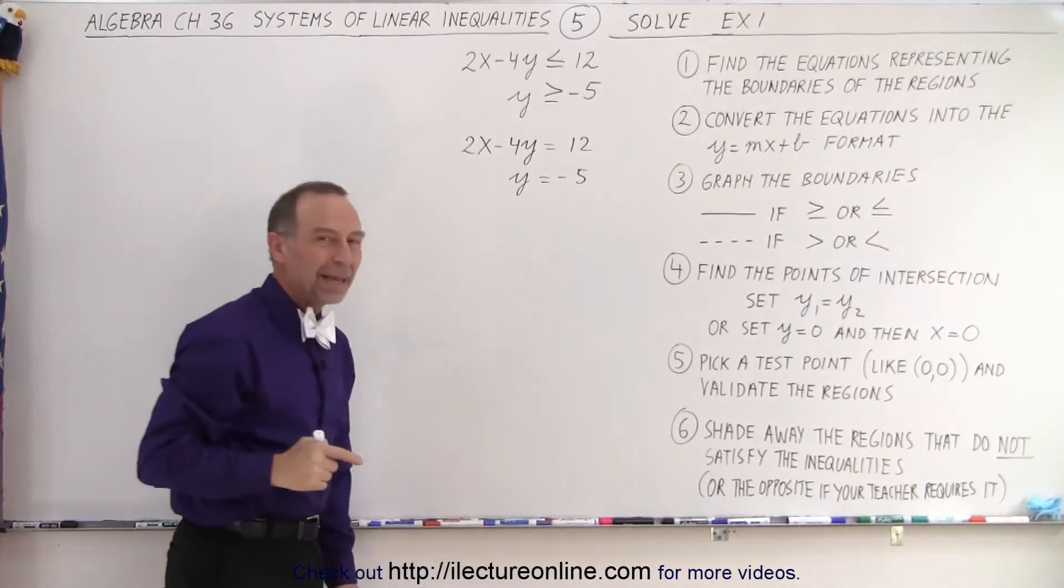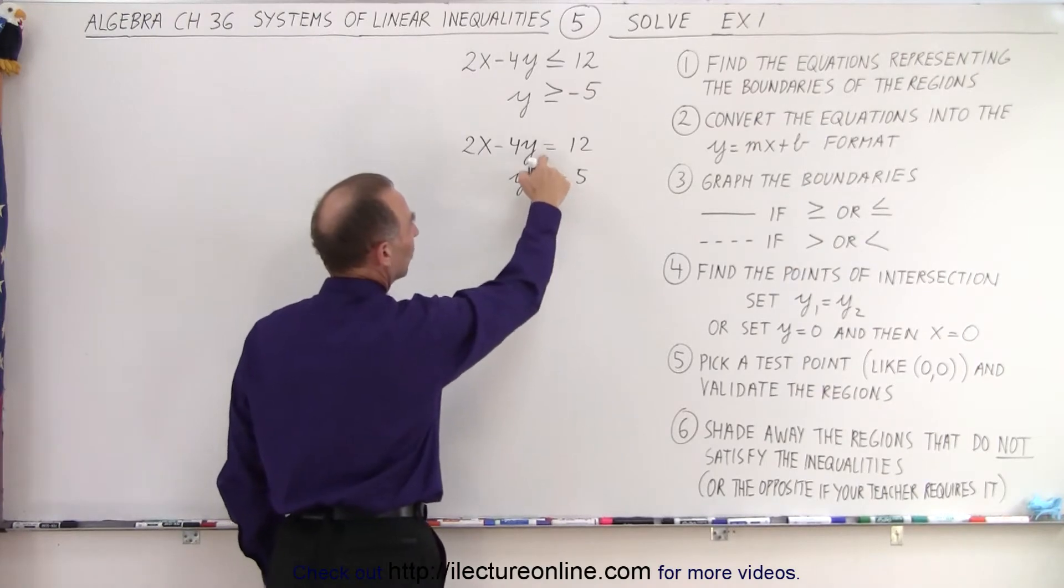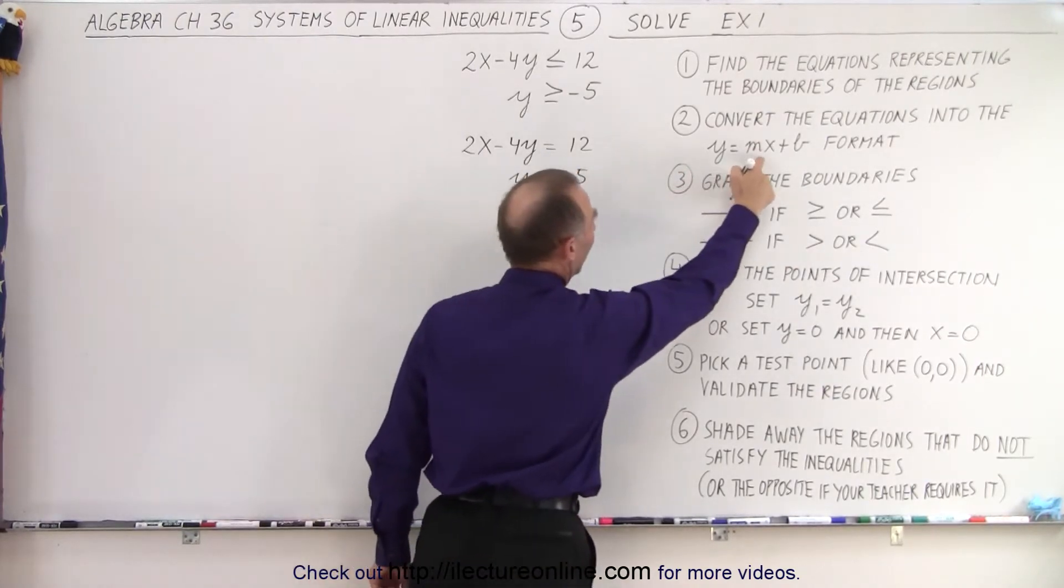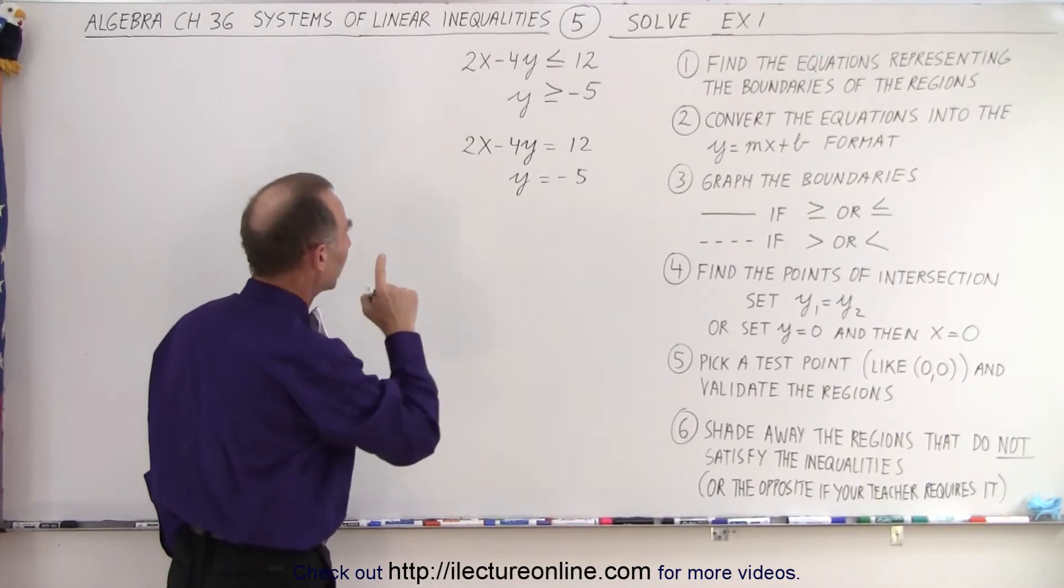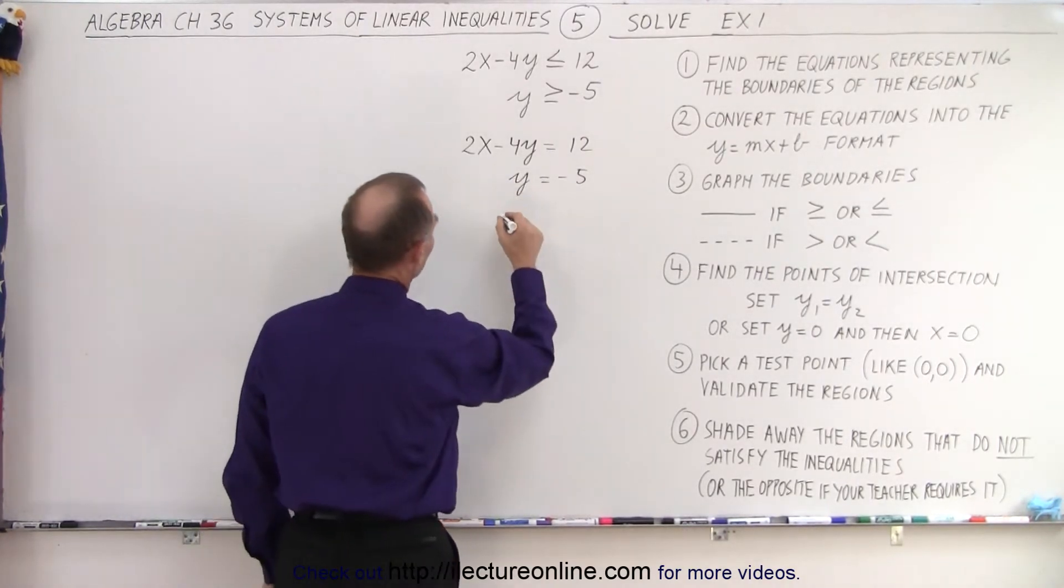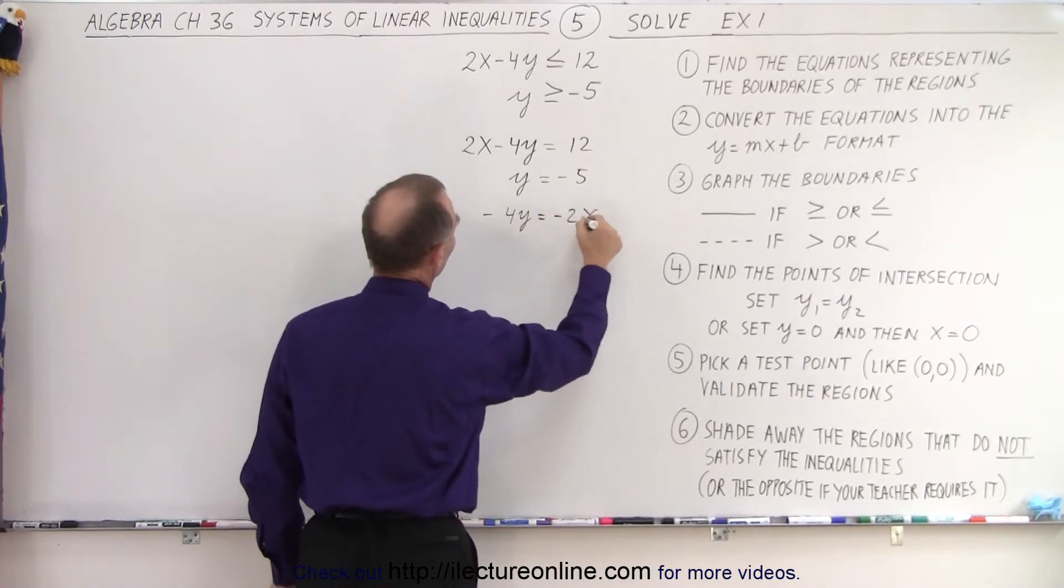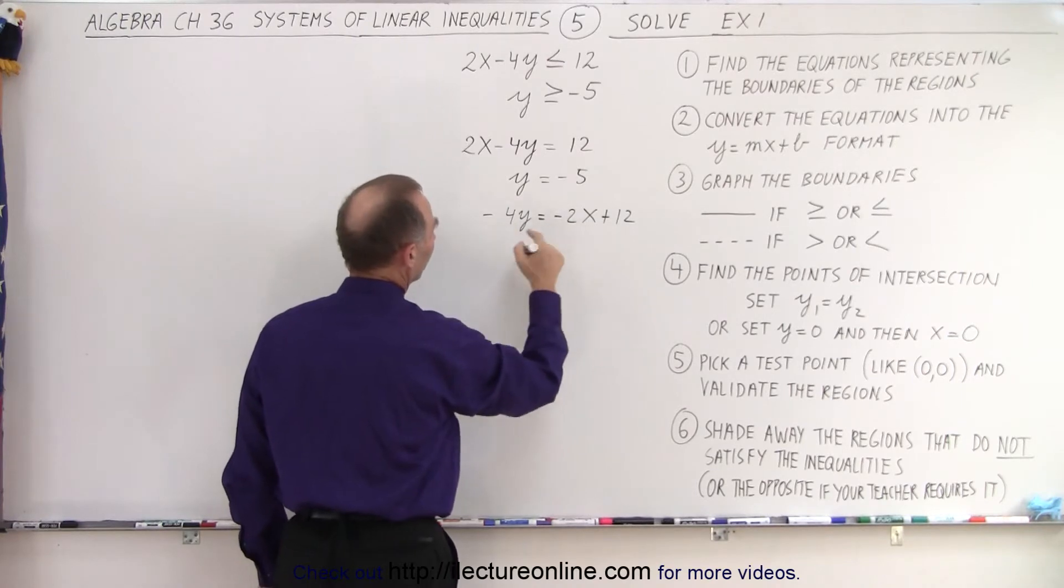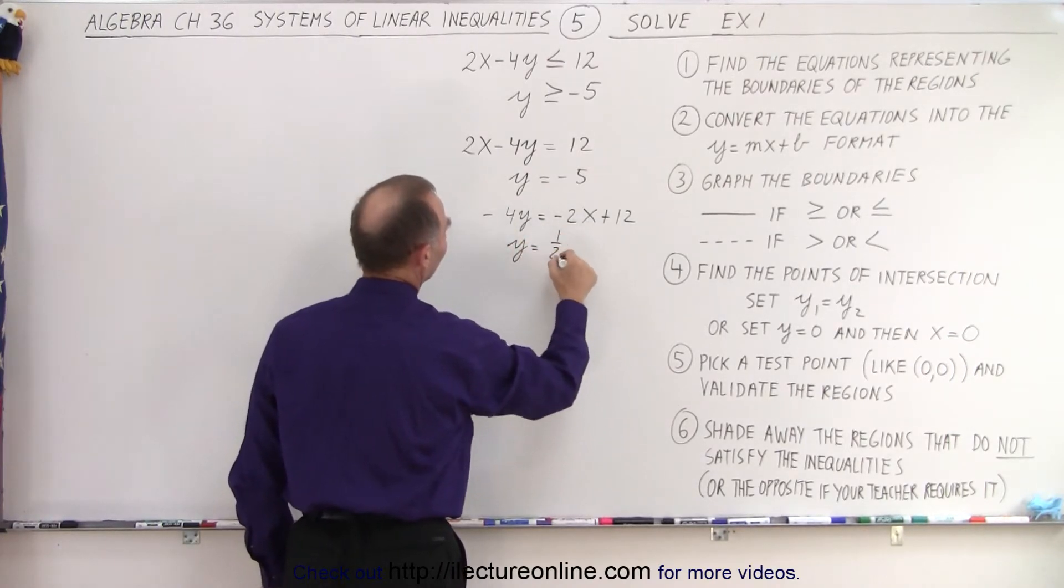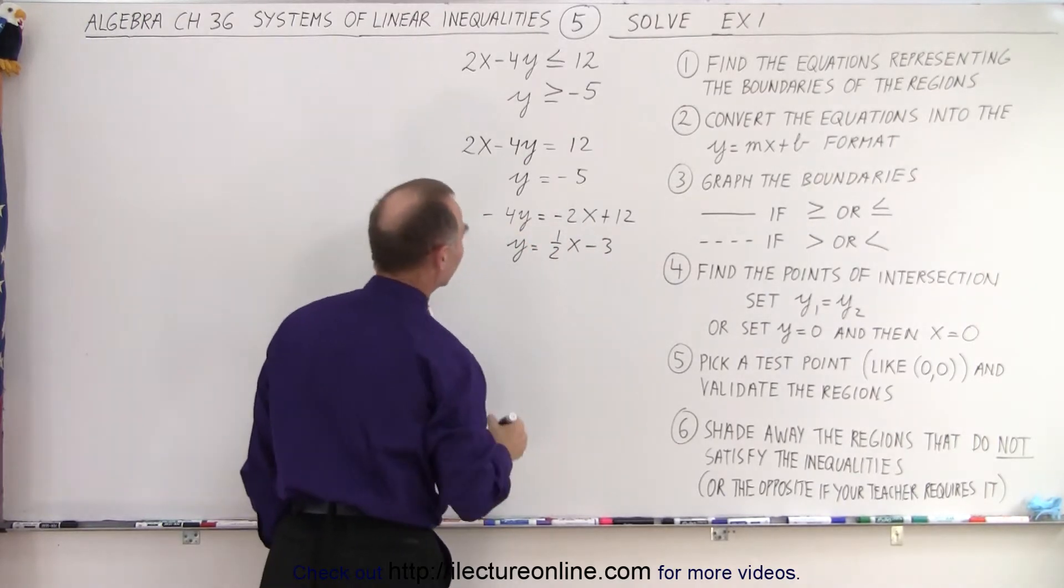Of course, that doesn't make it easier to graph them. Well, this one is easy enough, but this one is not. We want to turn this one into the y equals mx plus b format to make it easier to graph that equation. So we move 2x to the other side, and I'll put minus 4y equals minus 2x plus 12. And now we divide both sides by negative 4, so we get y equals 1 half x minus 3, because 12 divided by negative 4 is minus 3.